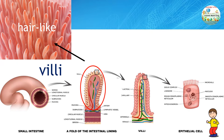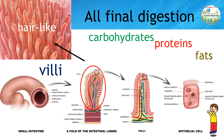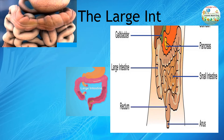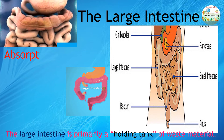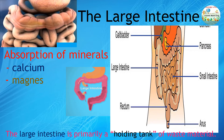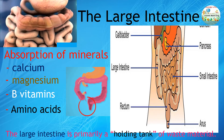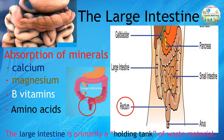The digested products are absorbed across the wall of the small intestine. While the primary function of the small intestine is absorption, all final digestion of carbohydrates, proteins, and fats takes place here. Most nutrients have been absorbed by the time the material reaches the end of the small intestine. The remaining material moves into the large intestine, which is primarily a holding tank of waste material. Absorption of minerals such as calcium, magnesium, B vitamins, and some amino acids takes place here. The waste in the large intestine is compressed into solid form before it enters the rectum and leaves the body through the anus.